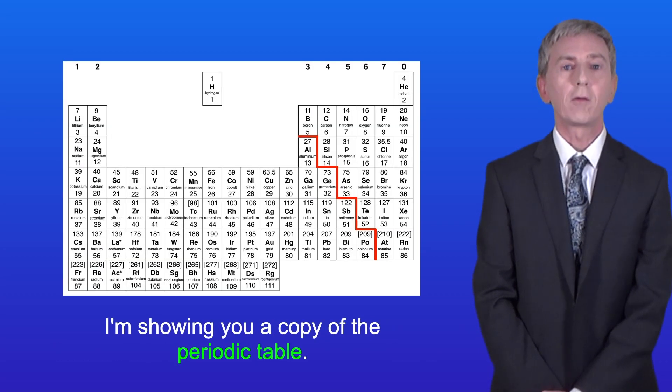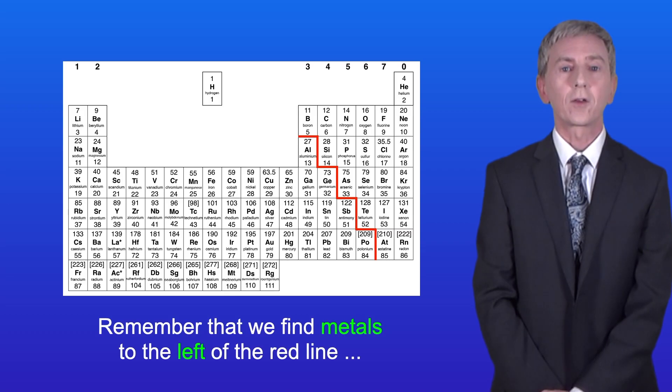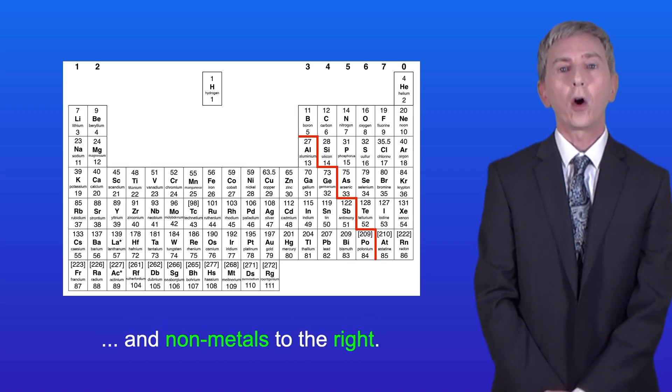I'm showing you a copy of the periodic table and we can often use this to work out the charge on the ion formed by an element. Remember that we find metals to the left of the red line and non-metals to the right.